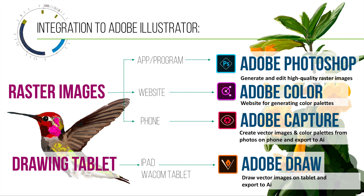The three raster image programs I want to point out are Adobe Photoshop, Adobe Color, and Adobe Capture. Adobe Photoshop is part of the Creative Cloud and is used to generate and edit high-quality raster images. Adobe Color is a website — just Google 'Adobe Color CC' — and it allows you to generate color palettes. Adobe Capture is an app for your phone that allows you to create vector images and color palettes from photos and export them to Adobe Illustrator.